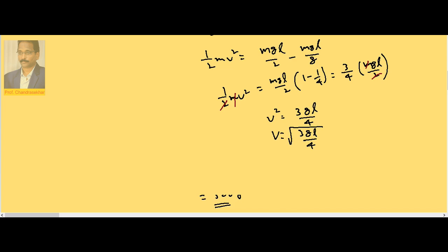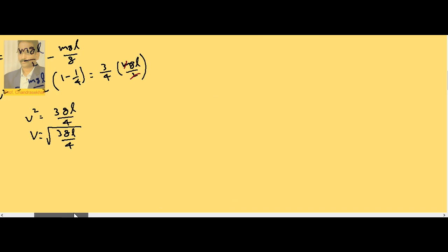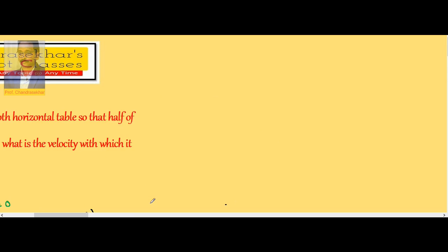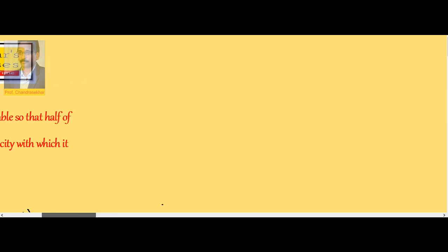Now substitute the value. L is given as 2 meters, so velocity is root of 3 by 4 times gl, 3 times 10 times 2 by 4, which is 2 times 2, 5 times root 15 meter per second.